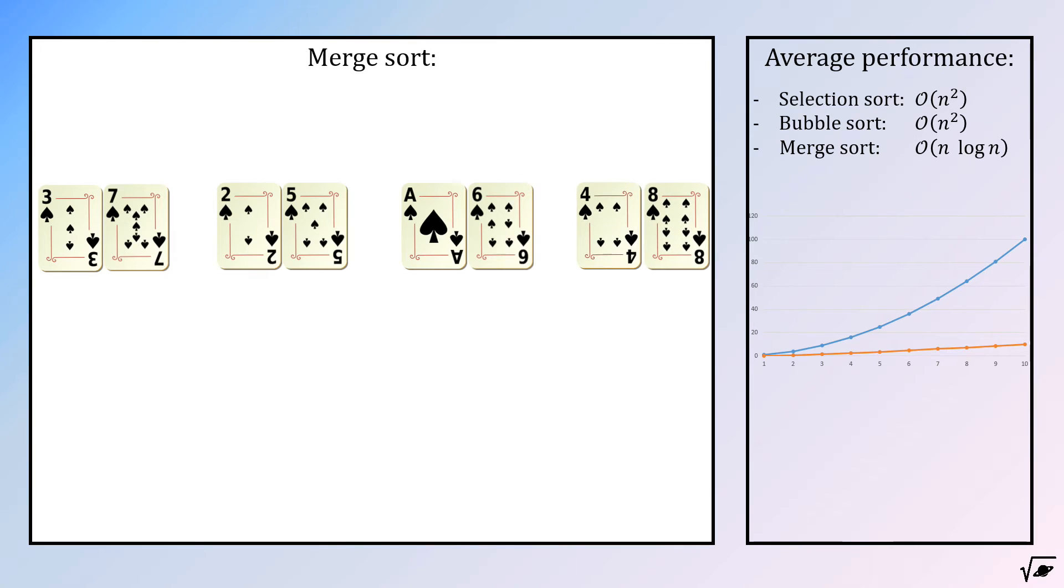Then, the first cards of the two sequences on the left hand side will be compared and again put into a new list. In our example, this means that the 2 will get into the new list first, since that one is smaller than card number 3.